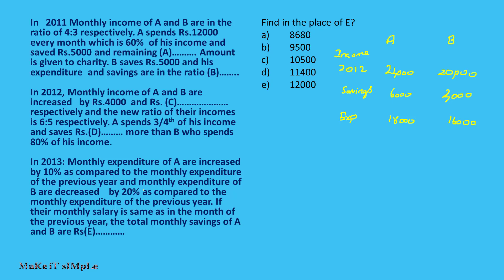Moving to 2013: in 2012, A saves 6,000 and B saves 4,000. Expenditure for A is 18,000 and for B is 16,000. The monthly expenditure of A increased by 10% as compared to the previous year's monthly expenditure.